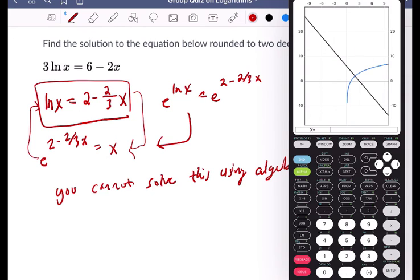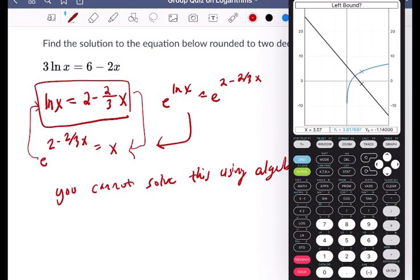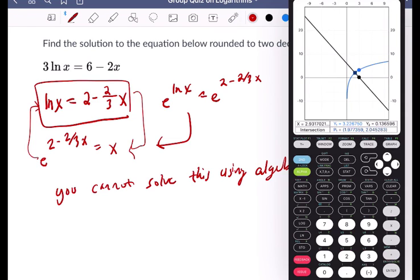You can see the intersection. So I'm going to hit second trace. So choice 5, which is intersect. First, you see up top in the calculator, it says pick a left bound. So I scroll to the left of where they intersect, hit enter. And then do it again to the right, hit enter.